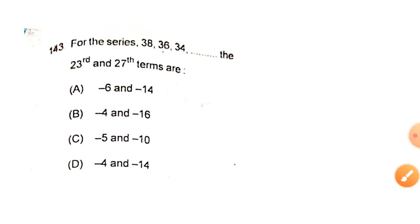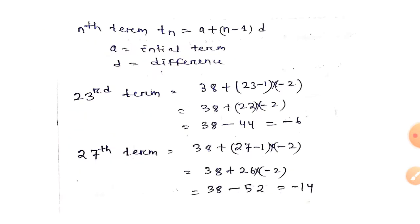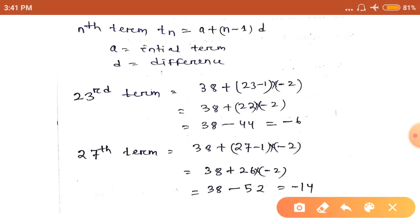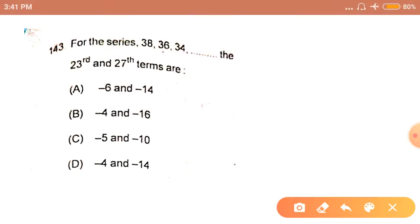For the series 38, 36, 34, the 23rd and 27th term are... This is the formula of harmonic series. In harmonic series, the formula of nth term is A plus n minus 1 into D. What is D? D is the difference. In our example, the difference is minus 2 and the initial term is 38. By applying the formula we will get the 23rd term is minus 6 and the 27th term is minus 14. The answer is option A.